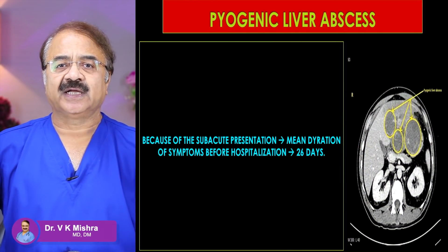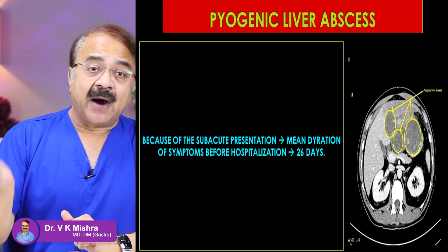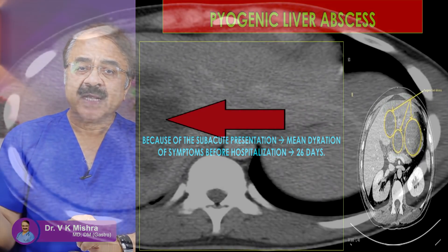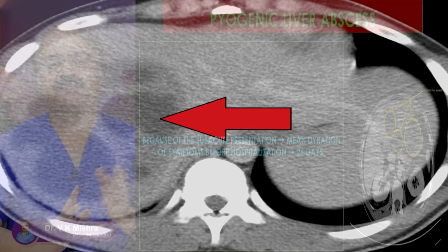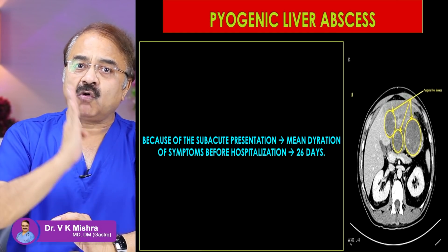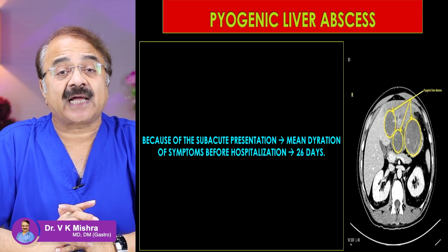The symptoms of pyogenic liver abscess progress very slowly, which makes it difficult for both patients and doctors to recognize them. Scientifically, it is believed that from the onset of liver abscess, it takes approximately 26 days before a patient reaches the hospital, meaning at least 20-25 days pass before a proper diagnosis and treatment is initiated.